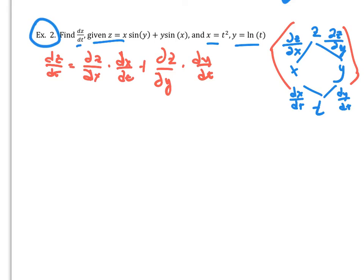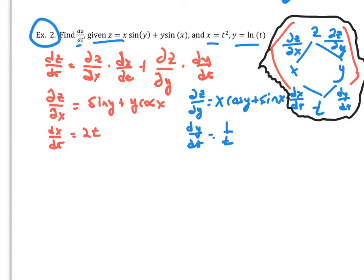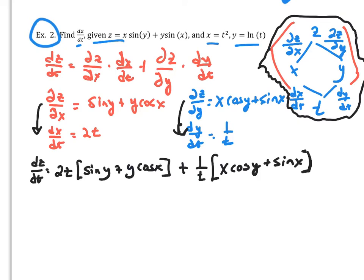So my dz dt is equal to all this. Go ahead and try this. And pause this and try this for yourself. See if you can do it. And then come back and check. That's the best way for you to learn. So I found all the partials and the derivatives that I needed to do. Then I just go ahead and multiply.